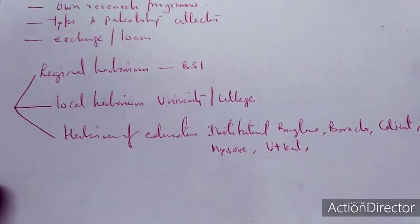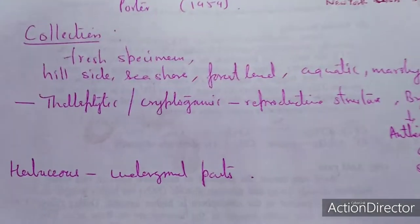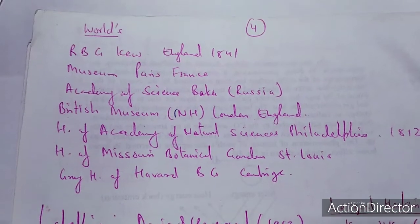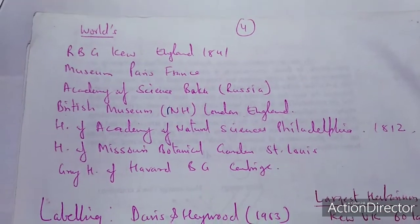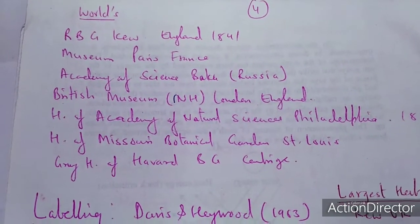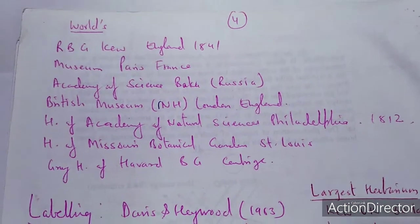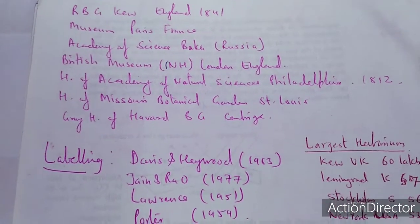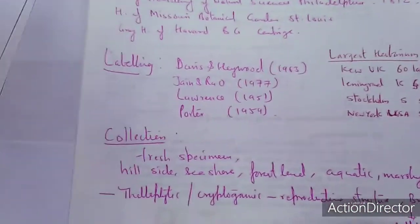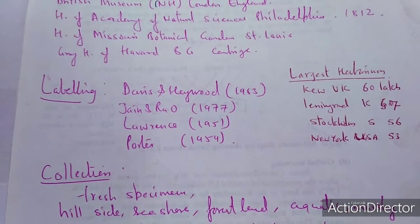Herbarium of educational institutes like the colleges of Bangalore, Baroda, Calicut, Delhi, and Missouri, among other places. World famous herbariums include: Royal Botanical Garden, England, established in 1841; Museum of Paris, France; Academy of Science, Baku, Russia; British Museum, London; Herbarium of Academy of Natural Science, Philadelphia; Herbarium of Missouri Botanical Garden, St. Louis; Gray Herbarium of Harvard University; the Harvard Botanical Garden, Cambridge; Leningrad; Stockholm; and the New York Botanical Garden.